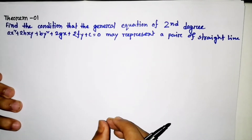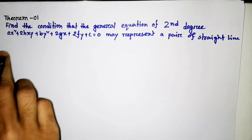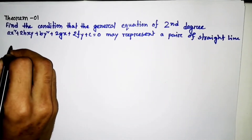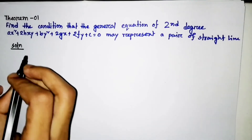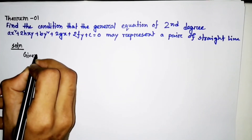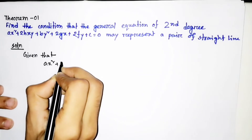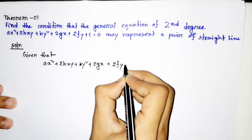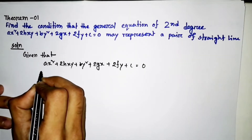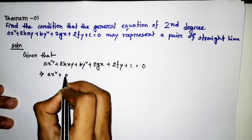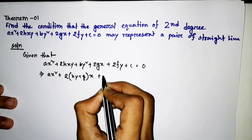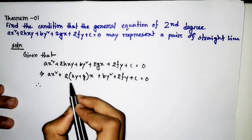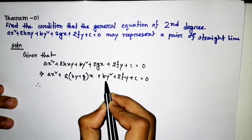We can see that the general second degree equation ax² + 2hxy + by² + 2gx + 2fy + c = 0 is to be examined for the condition that it represents a pair of straight lines.